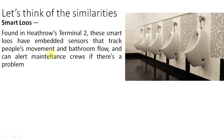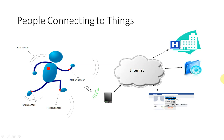For example, at Heathrow Terminal 2, smart restrooms automatically alert the maintenance crew if there is any problem — people's movement and bathroom flow are automated. No manual staff is required to clean these bathrooms. These automated systems are being implemented and installed across the world and will be increasingly used in the future.